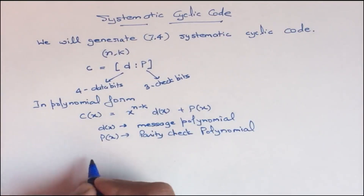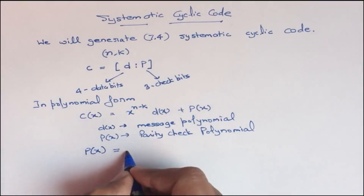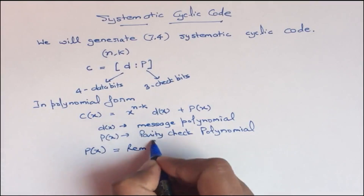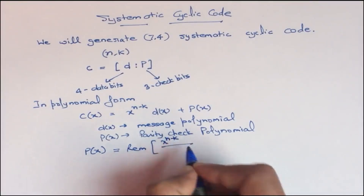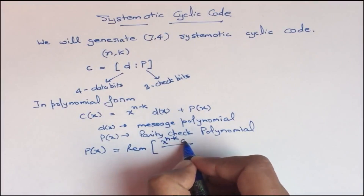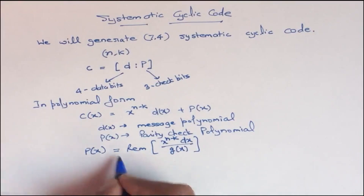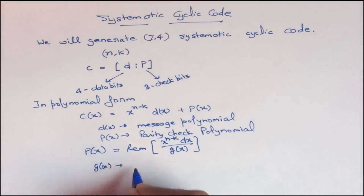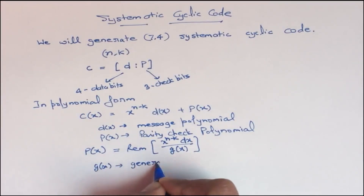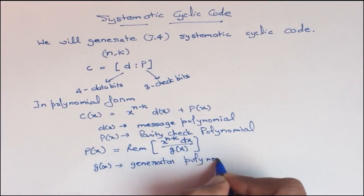Now if we try to find out how the value of p(x) can be found, the formula will be that p(x) is the remainder of x to the power n minus k times d(x) divided by g(x). So here g(x) is termed as the generator polynomial, and x to the power n minus k times d(x) is the dividend.